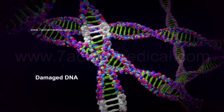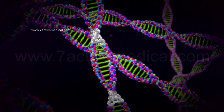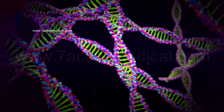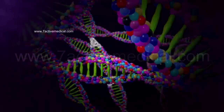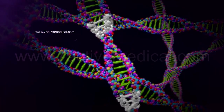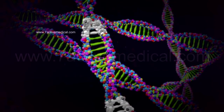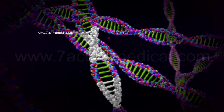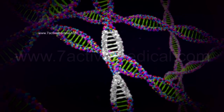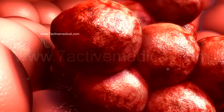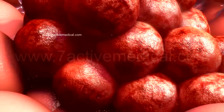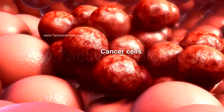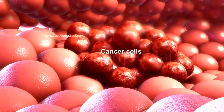If the DNA in the nucleus gets damaged, it either repairs itself or sends instructions to the cell to die. In the case of cancer, the portion of the DNA that controls cell division is altered, resulting in the DNA being unable to repair itself or instruct the cell to die. This causes the cell to grow and divide uncontrollably, creating multiple copies of itself called cancer cells, which displace normal cells to form a tumor.